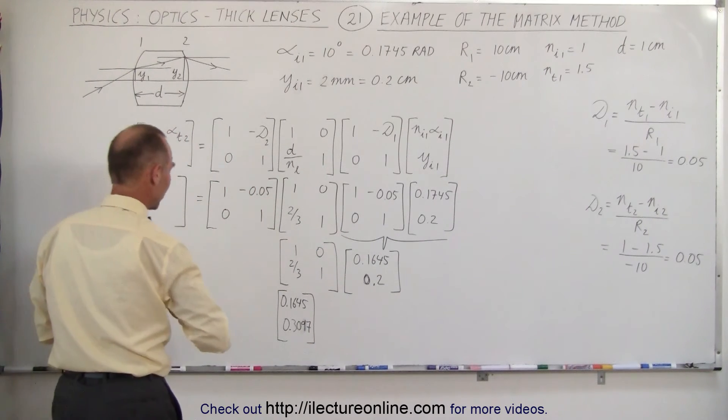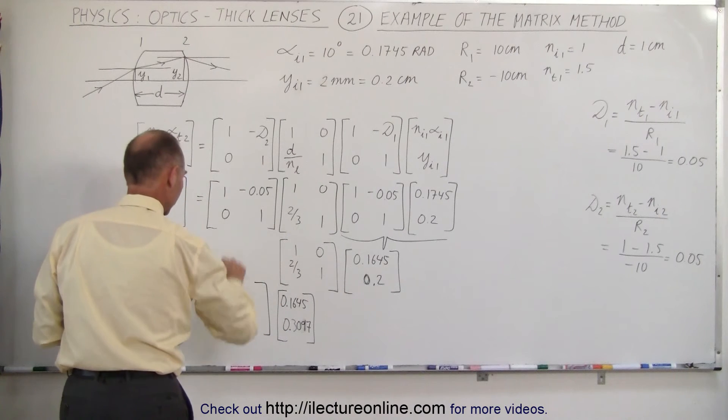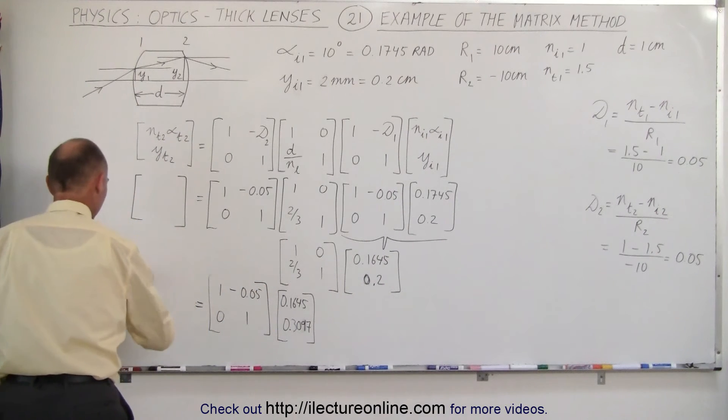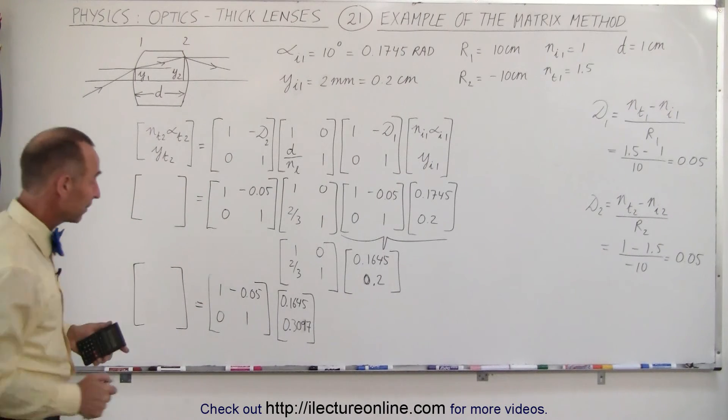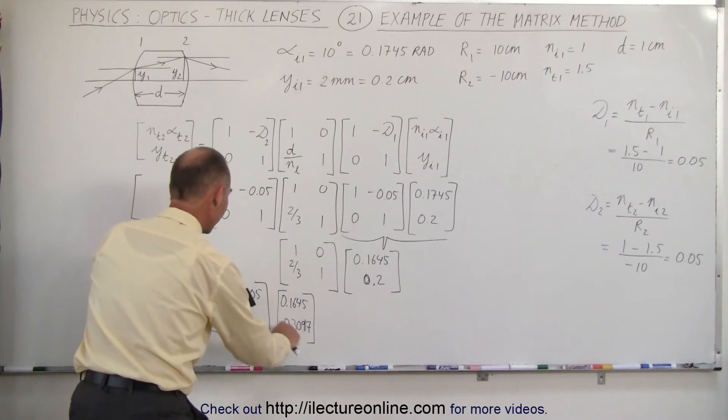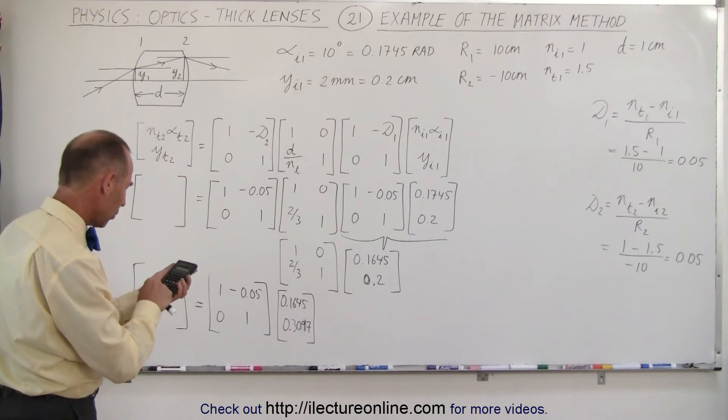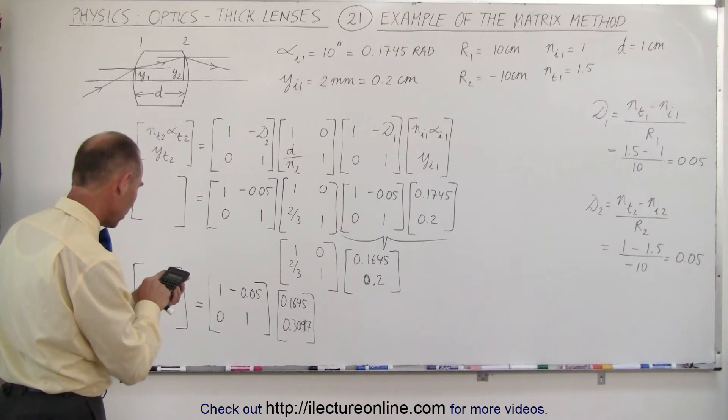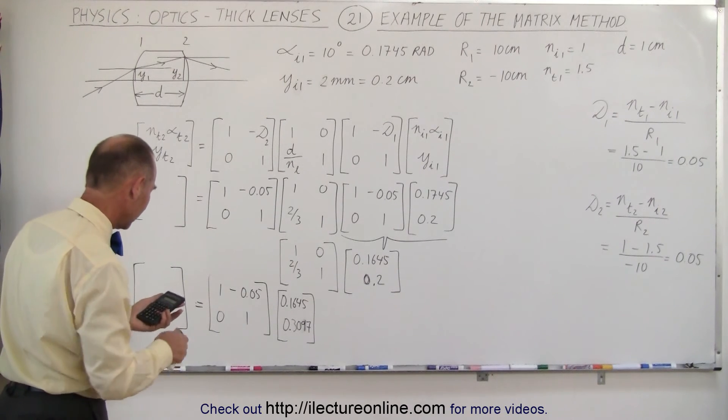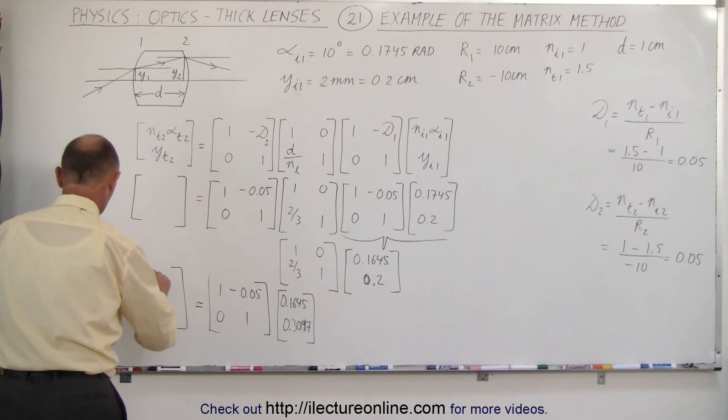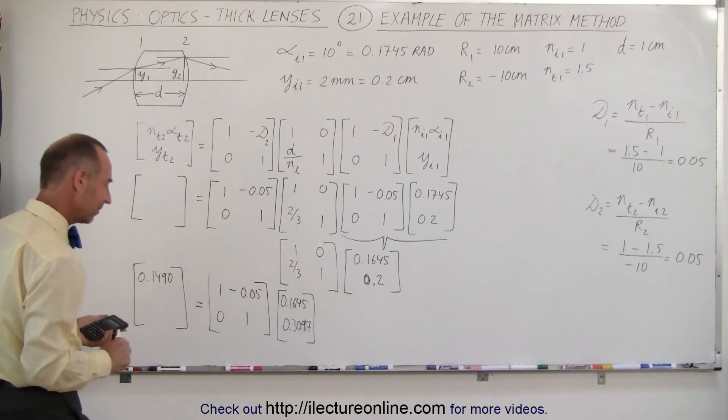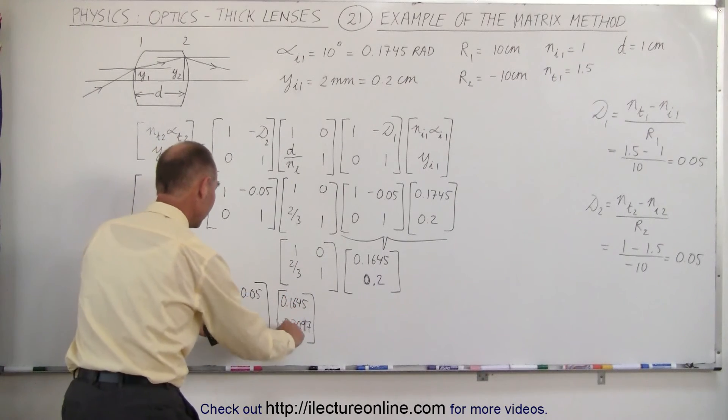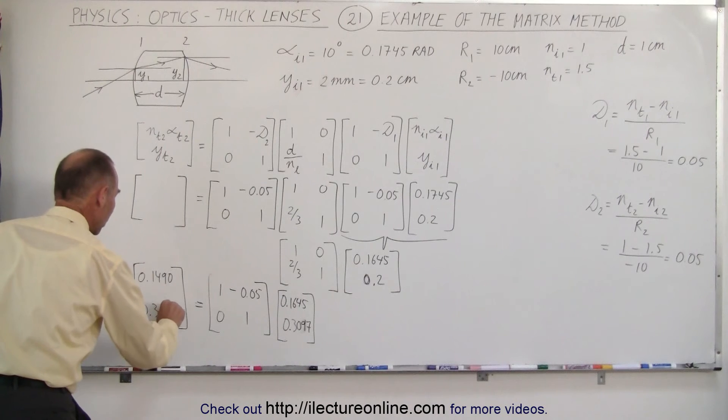Now we multiply this times this to get that matrix. So we end up with 1, 0, 1, minus 0.05. So I have 1 times this plus this times this, that's a minus. So we end up with 0.1645 minus 0.05 times 0.3097 equals, and that gives us 0.1490. And then for the second value, we have this times this that's 0, plus this times this, which gives us 0.3097.